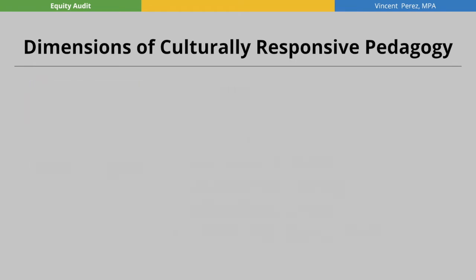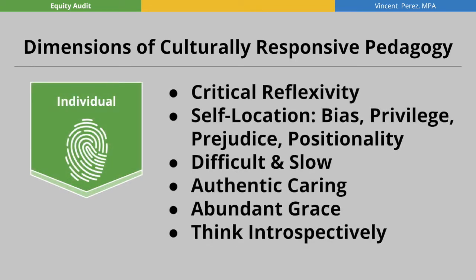And finally, the individual. This is critical reflexivity or self-location work that considers our own inherent bias, privilege, and positionality. This work is very difficult and slow; however, there is an urgency in the field. This work requires an abundant amount of grace and authentic caring. We think introspectively.